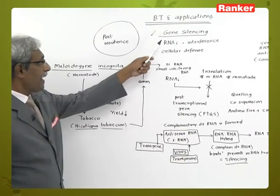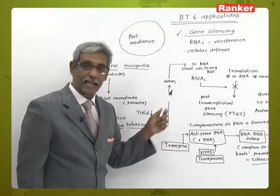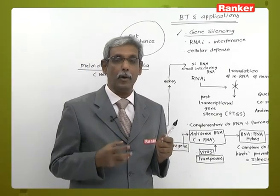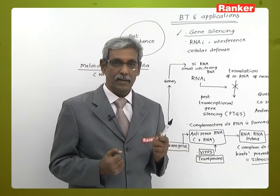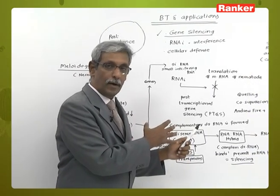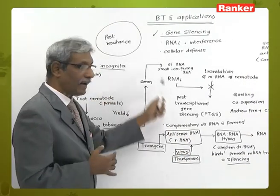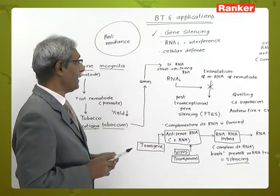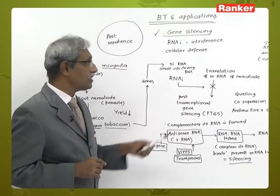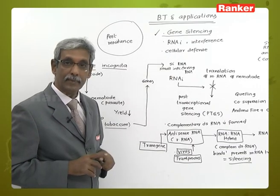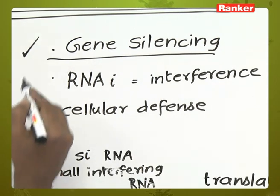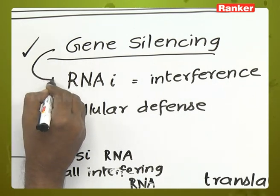What exactly is the meaning of gene silencing? Gene silencing means you prevent the expression of a product of the gene. In tobacco, there is a process termed as RNAi — where the 'i' refers to interference. RNAi and gene silencing essentially mean the same thing.